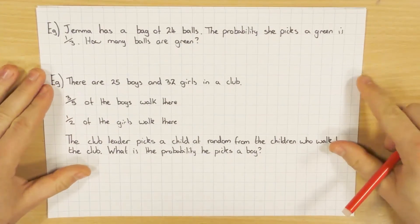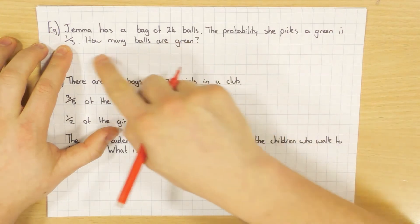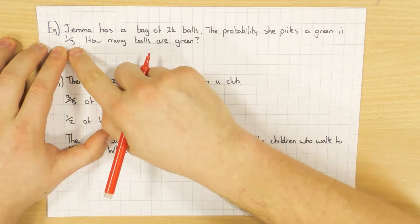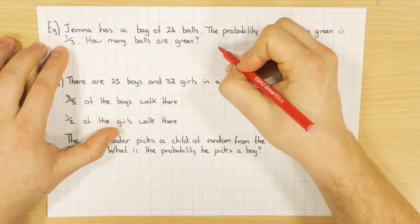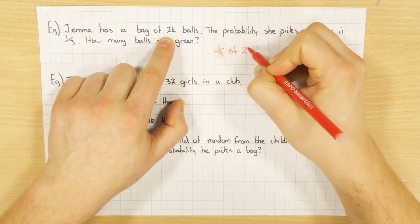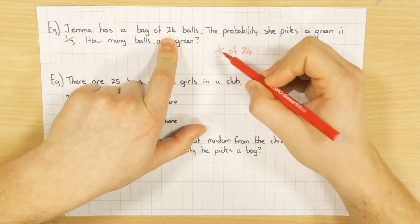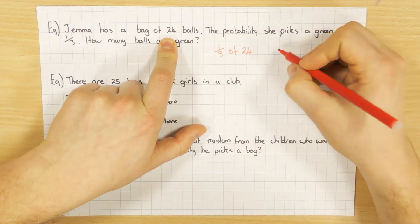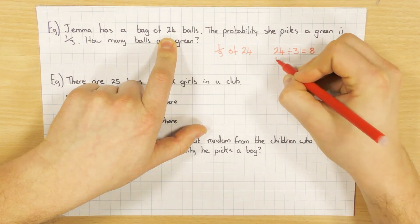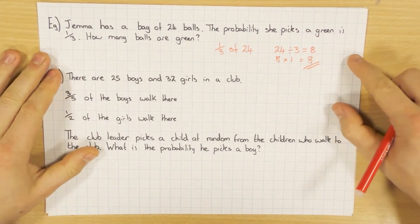So in this next example, we're told that Gemma has a bag of 24 balls and the probability she picks a green is one third. So they're telling us what the probability is. But then it asks us, how many are green? So if the probability is one third, all it's asking us to do is work out what one third of the total is. Well, the total is 24. So it's one third of 24. You divide by the bottom and then times by the top. So 24 divided by 3 gives us 8. Then 8 times 1 is 8. So one third of 24 gives me an answer of 8.